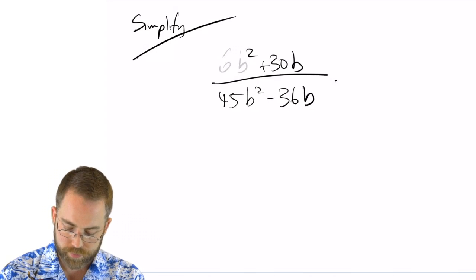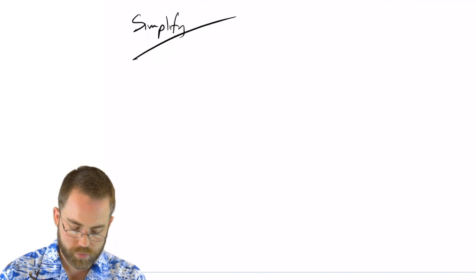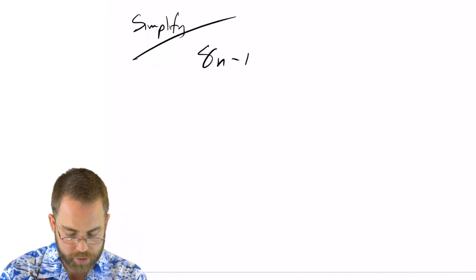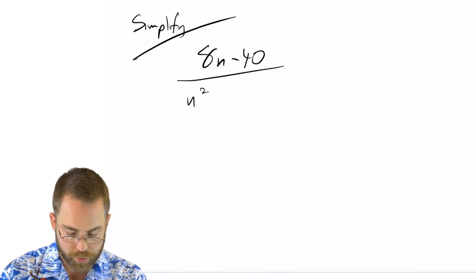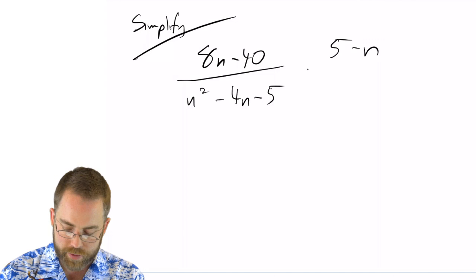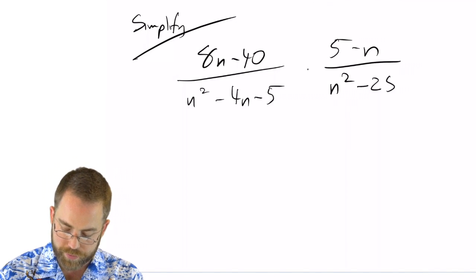It says 8n minus 40 over n squared minus 4n minus 5, times 5 minus n over n squared minus 25.